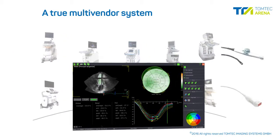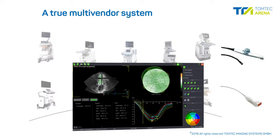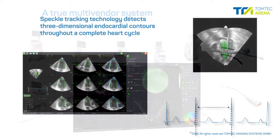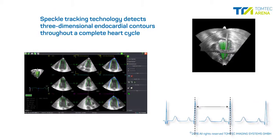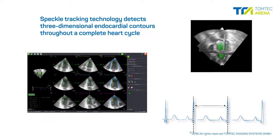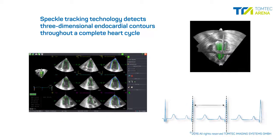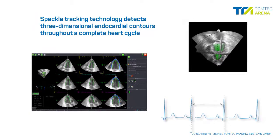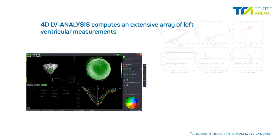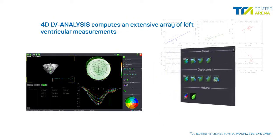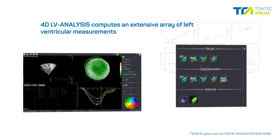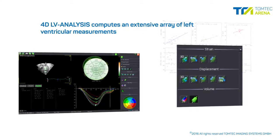Trans-thoracic and trans-esophageal volume data can be analyzed. Robust and proven speckle tracking technology detects 3-dimensional endocardial contours automatically throughout a complete heart cycle. Based on these contours, 4D LV Analysis computes an extensive array of left ventricular measurements.